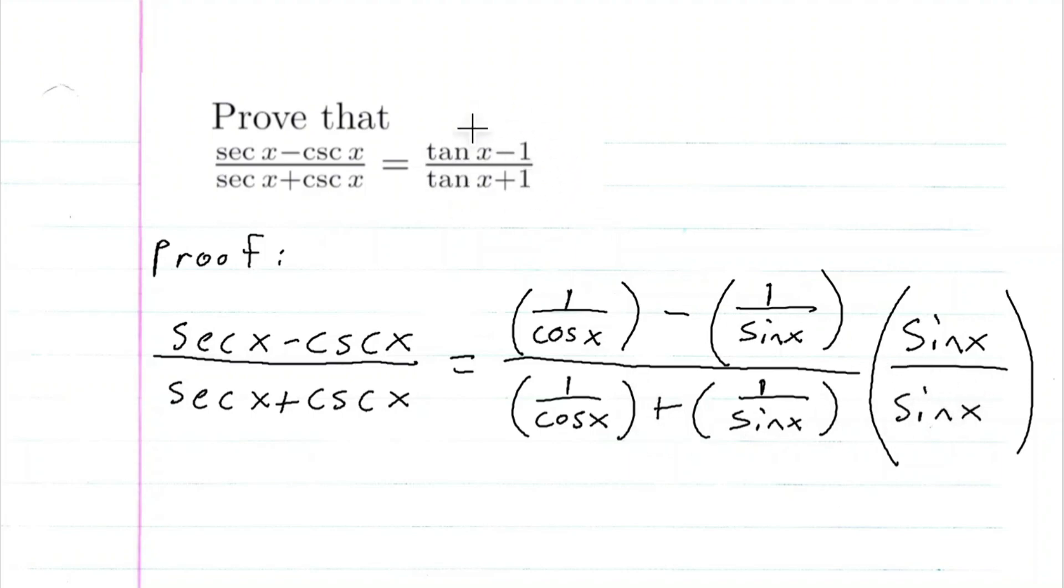then I get what I want, right? Because sine x times 1 over cosine x is sine x over cosine x, which is tangent x, and sine x times 1 over sine x is just 1. And then the same thing in the bottom. And this is legitimate because this is the same thing as this, just multiplied by a special 1.